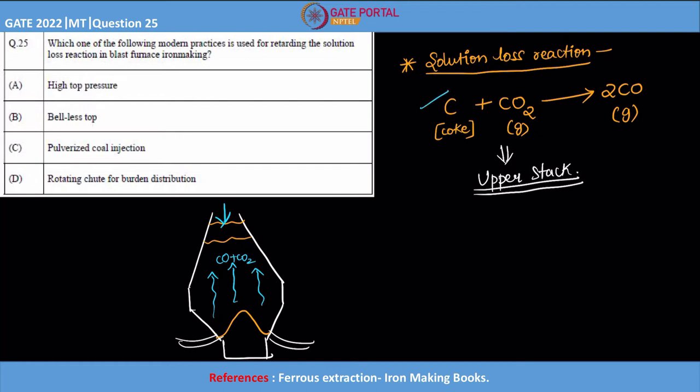Now, what I am telling you is if this particular reaction is taking place at the uppermost region, what is happening? The coke that you are charging is actually immediately reacting with CO2 and it is forming CO. Of course, if the same reaction is forming somewhere here or here, it is fine because the CO will be actually utilized to reduce the ore layer just above them.